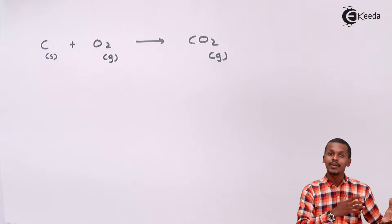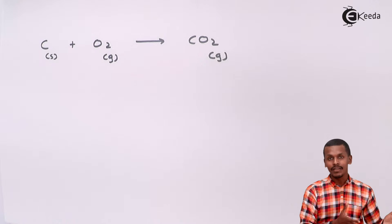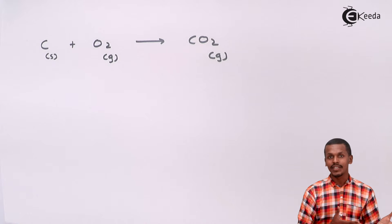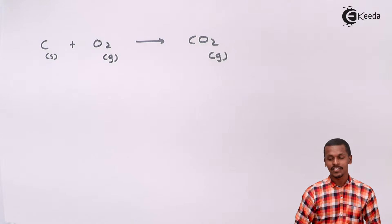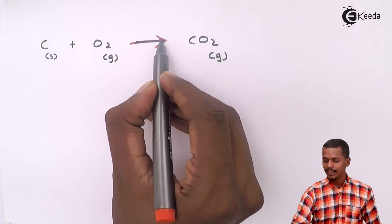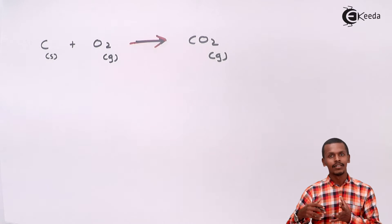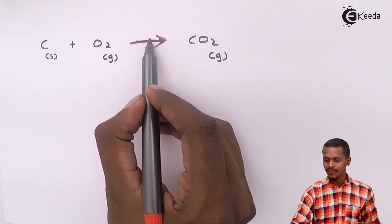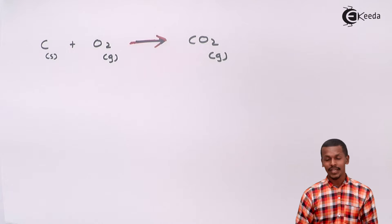That carbon dioxide cannot be converted back into carbon and oxygen using the same method. That is the reason we cannot reverse the reaction, and reactions which cannot be reversed are basically known as irreversible reactions. This representation indicates that it is a unidirectional process — the reactants move forward to give a particular product, as shown by the single arrow. That was the irreversible reaction.